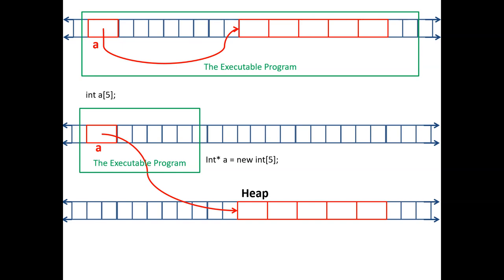With dynamic allocation, your program runs, then you say: I'm going to ask the operating system - give me five integers. So the five integers are not in your executable anymore. After the program is gone and the executable goes out - memory leak. You have to take care of it yourself because you created it. You have to wipe it out yourself. With power comes responsibility.